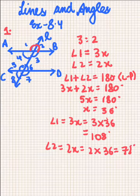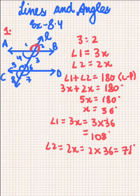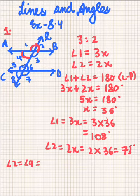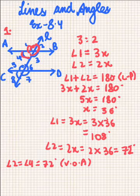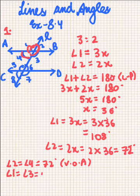Now it becomes easy for us to find all the angles. Since Angle 2 and Angle 4 form vertically opposite angles, these will be equal. Then Angle 1 and Angle 3 also form vertically opposite angles.